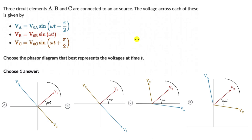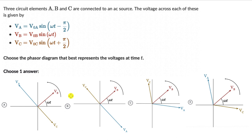Let's solve a couple of questions on relating phasor diagrams with equations. Here we have three circuit elements A, B and C which are connected to an AC source. The voltage across each of these is given by these equations. Choose the phasor diagram that best represents the voltage at time t — we have to choose one out of these four options. As always, pause the video and give this one a try first.